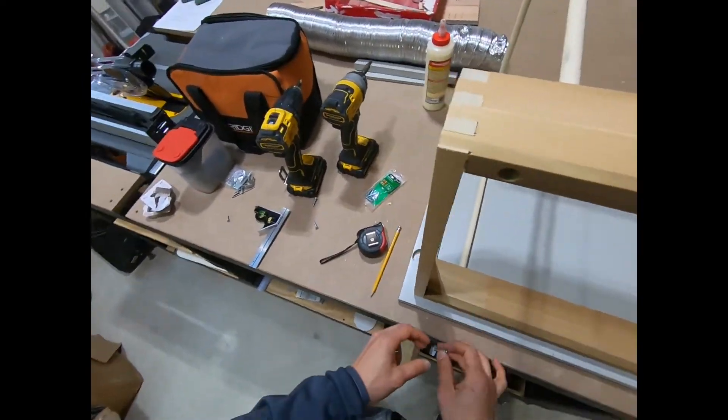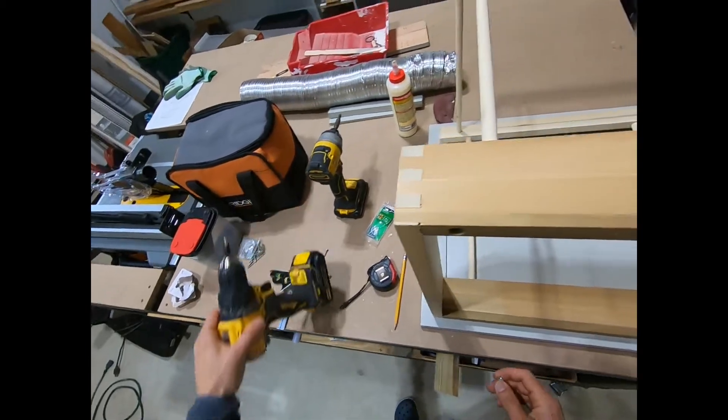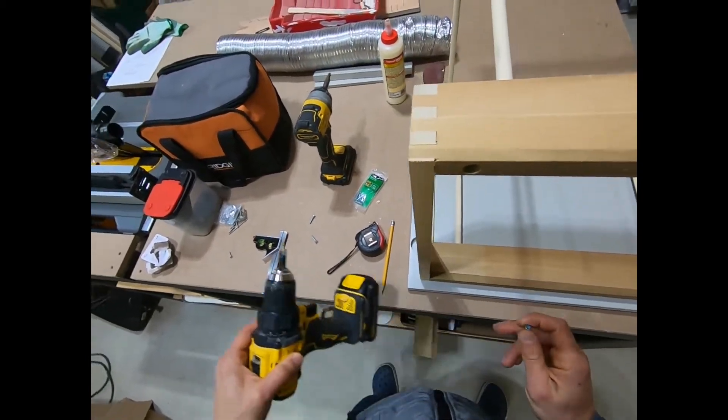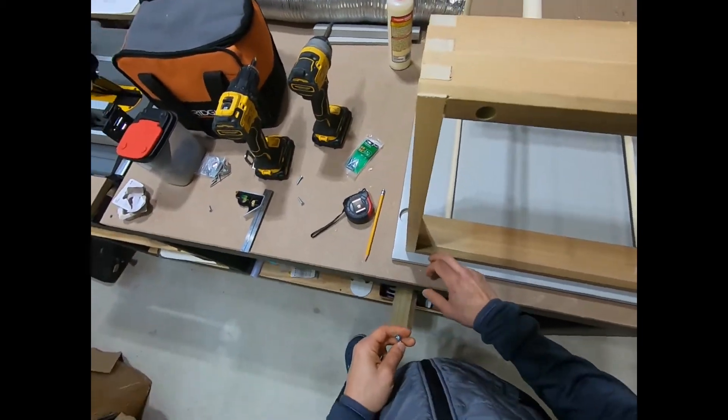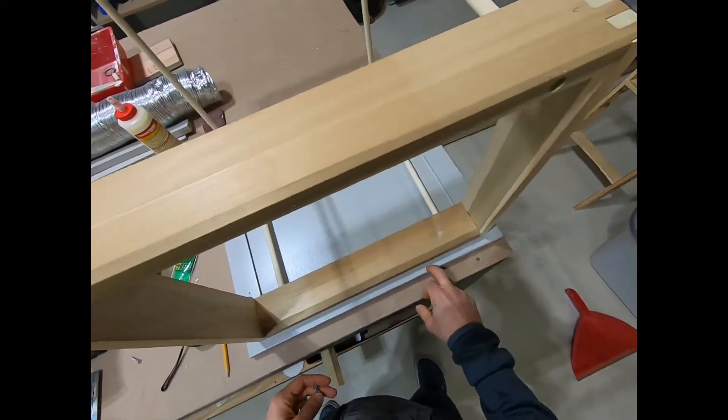I don't think that's quite enough. So I'm going to use my countersink bit to drop down about maybe another quarter or one-eighth. Just so I can catch a little bit more of the door.